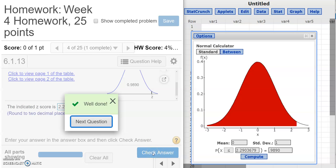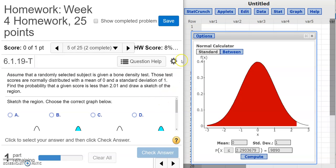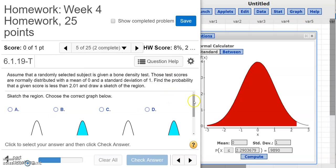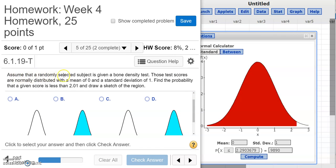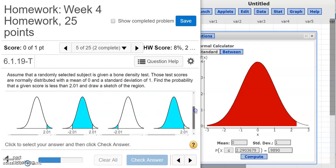Let's go to the next question and see how we can do the normal distribution in StatCrunch in a different way. So in this question, it says assume that a randomly selected subject is given a bone density test. Those test scores are normally distributed with a mean of 0 and a standard deviation of 1. Find the probability that a given score is less than 2.01 and draw and sketch the region. So less than 2.01. So if I look at these few options right here, I see my 2.01 in each one.